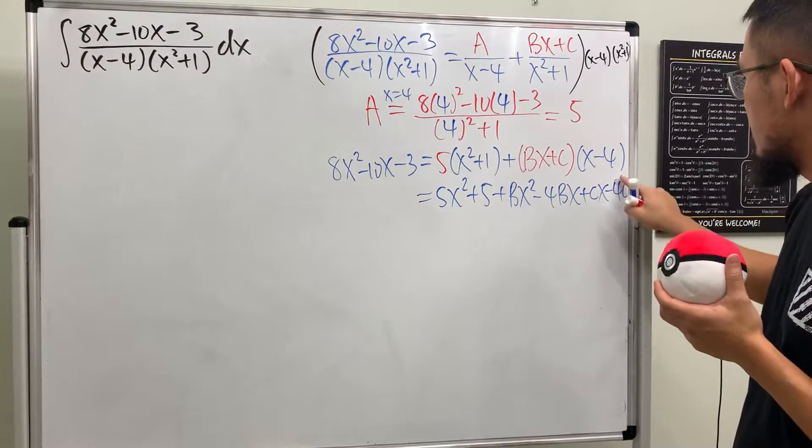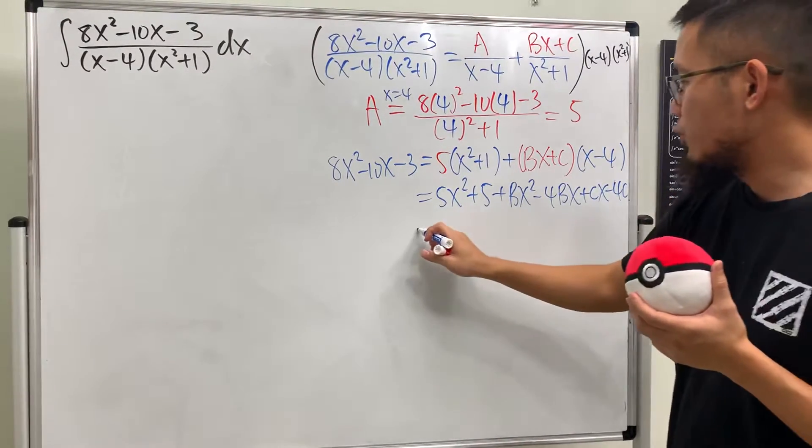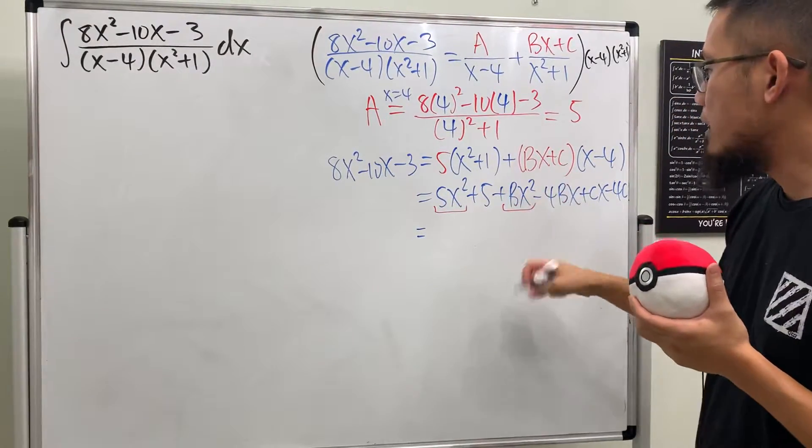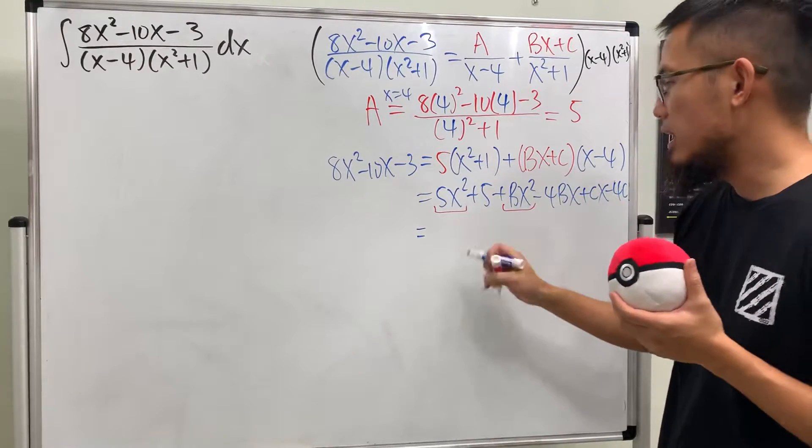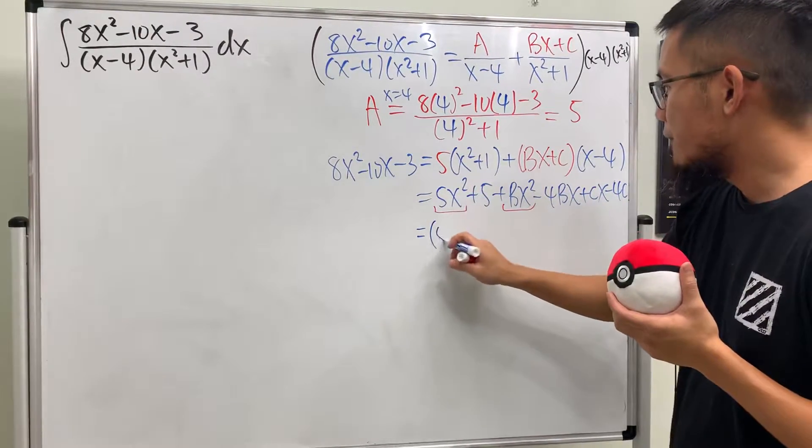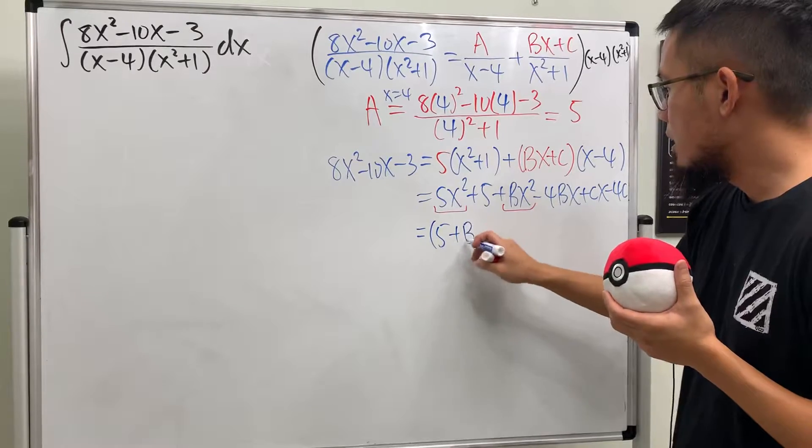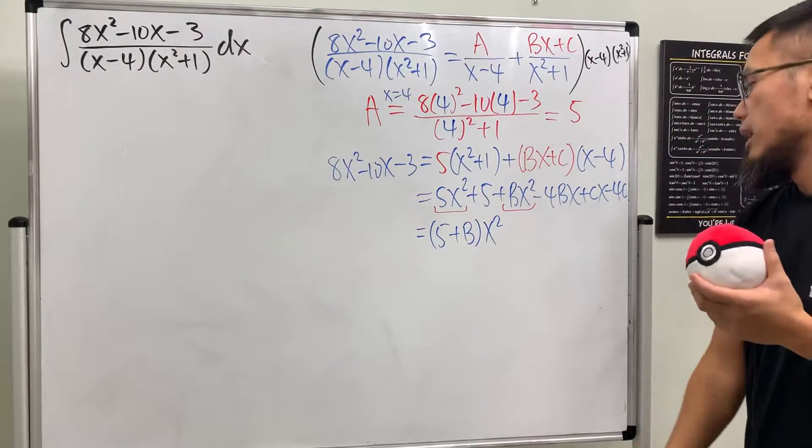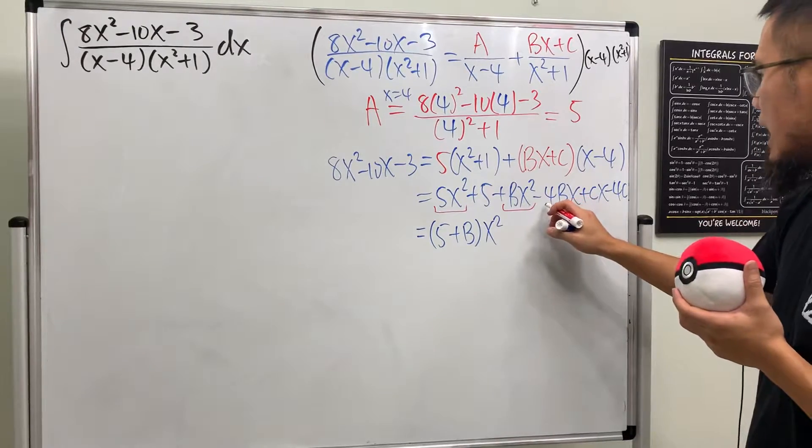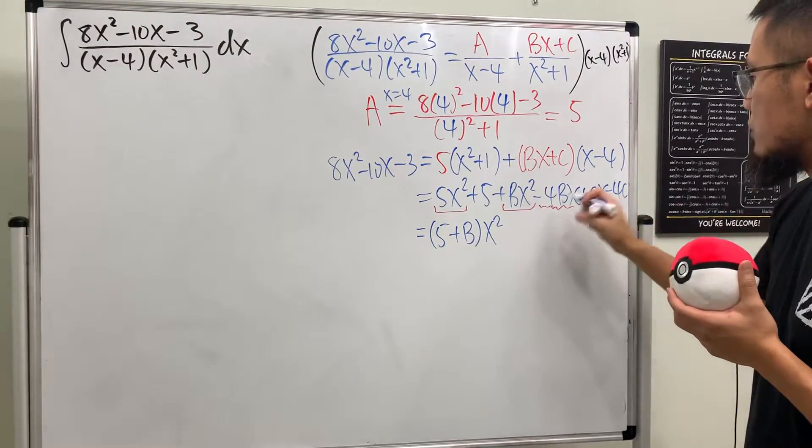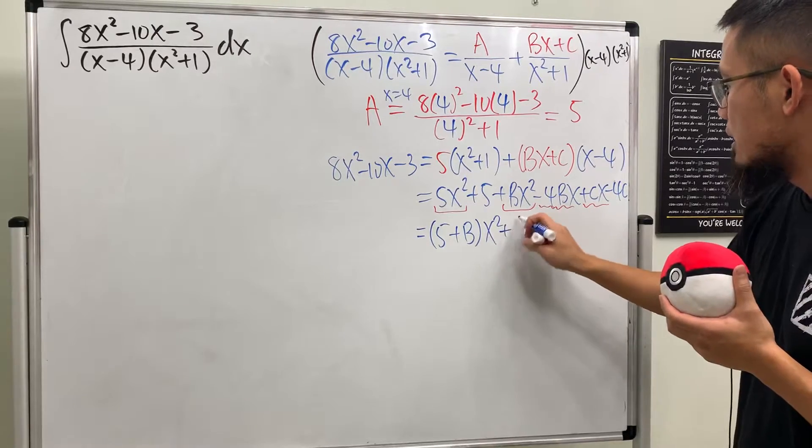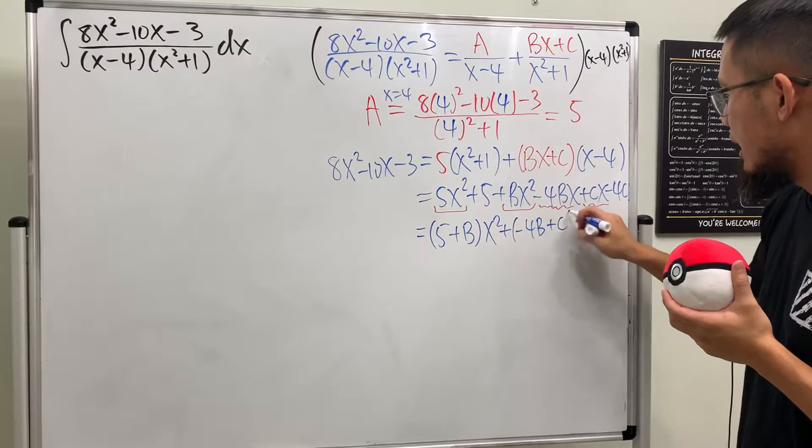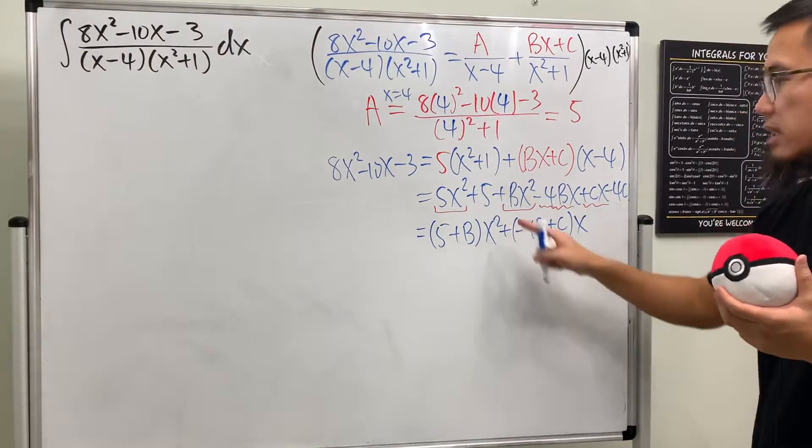Let's see if we can combine anything. This and that we can combine, factor out the x², we get (5 + B)x². Then we see that the x term we have this and that, so I will just put down + (-4B + C)x.